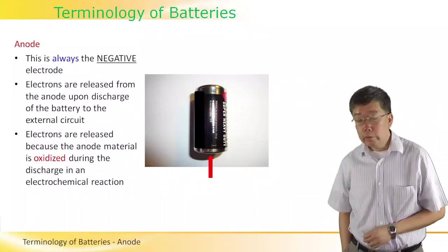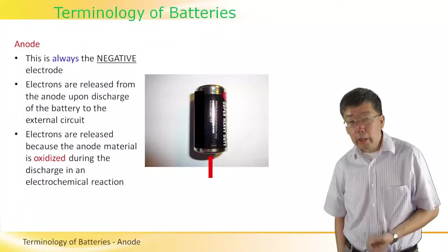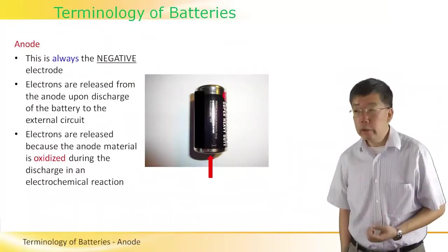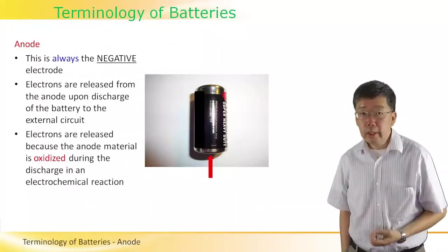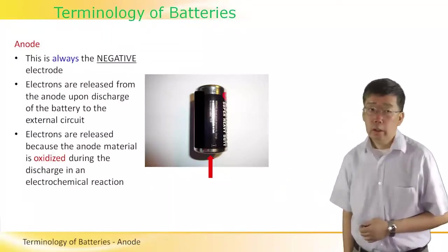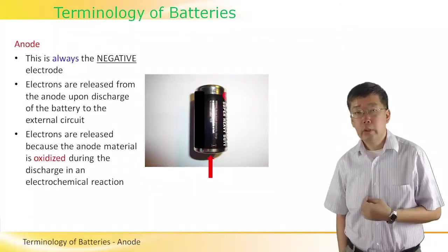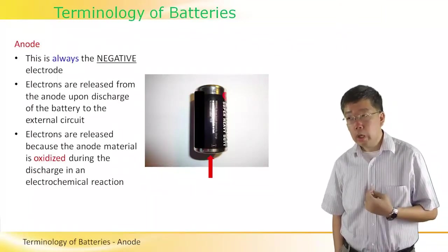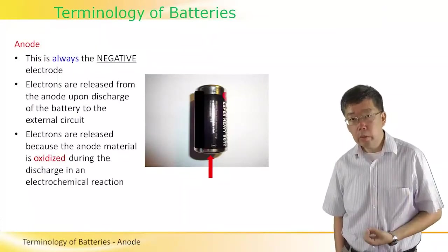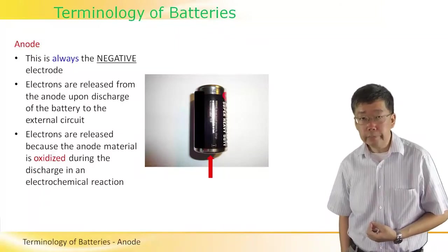The red arrow is pointing towards the anode of the battery. The definition for the anode is that it is always the negative electrode, and it's negative because electrons are released from this anode during the discharge of the battery.